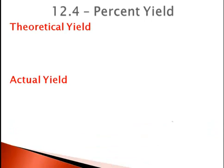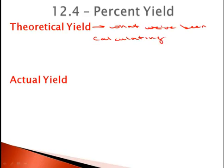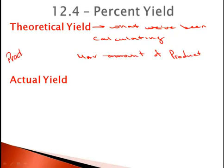The maximum amount of product that can be produced by a given amount of reactant is our theoretical yield. This is what we've been calculating, and it's the maximum amount of product. This is the product made from the limiting reactant.